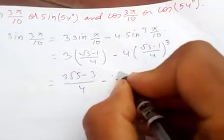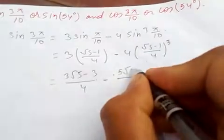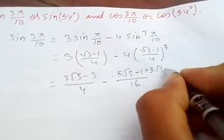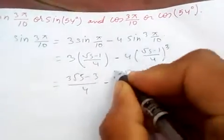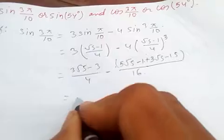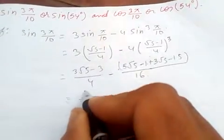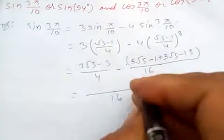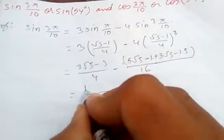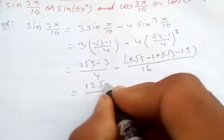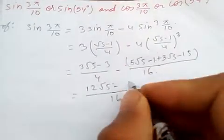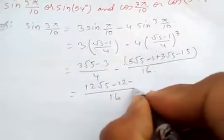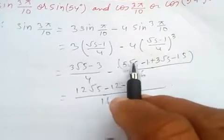If you apply this you get 5√5 minus 1 plus 3√5 minus 15. Now if I take LCM 16, this becomes 12√5 minus 12, and this 5√5 and √5 is 8√5.